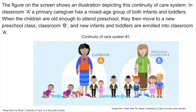The figure on the screen shows an illustration depicting this continuity of care system. In classroom A, a primary caregiver has a mixed-age group of both infants and toddlers. When the children are old enough to attend preschool, they then move to a new preschool class, classroom B, and new infants and toddlers are enrolled into classroom A.